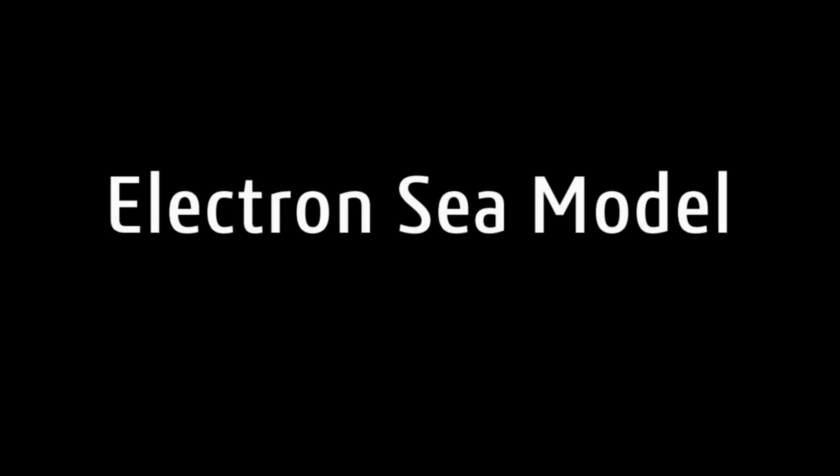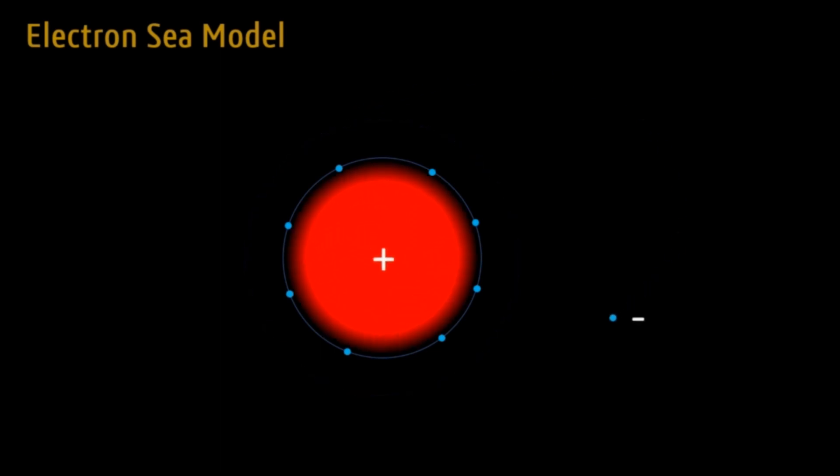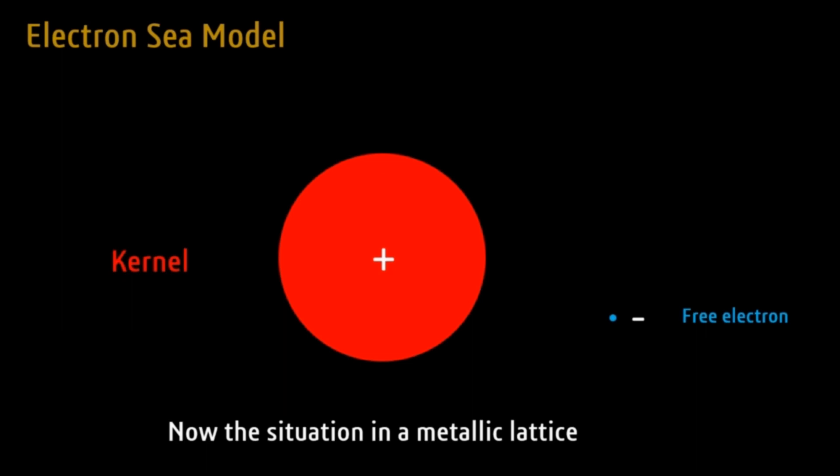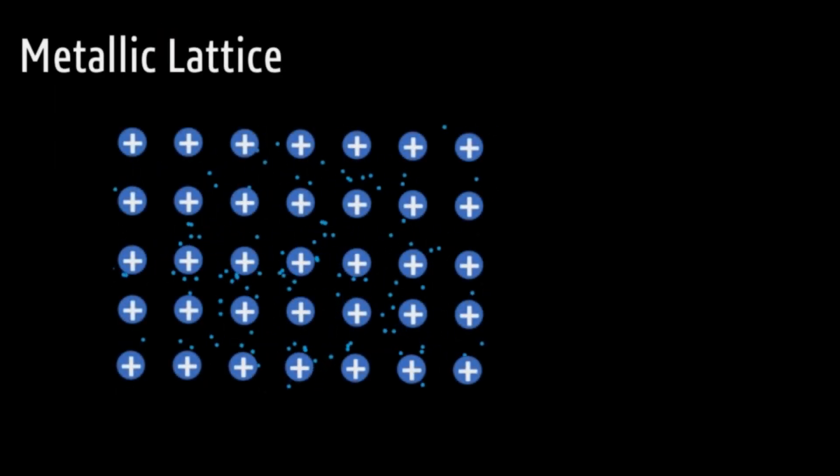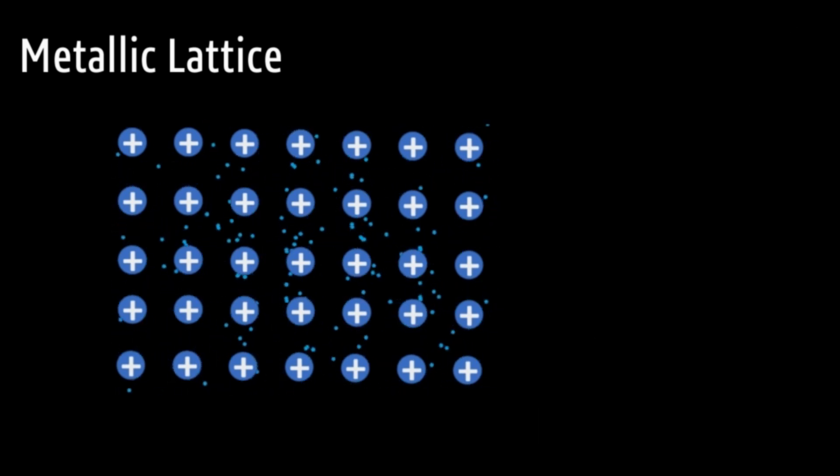Electron sea model: In electron sea model, the valence electrons are believed to be free to move throughout the crystal consisting of positive ions. Laws of classical mechanics are well maintained. Metallic lattice can be described as an array of positive atomic cores, called kernels, immersed in a sea of mobile electrons. Strong electrostatic forces are the origin of high lattice energy.